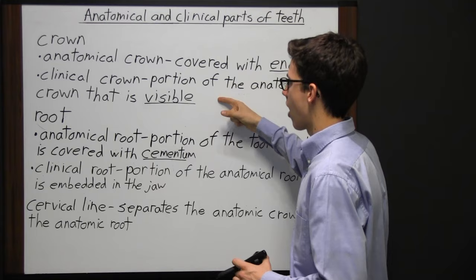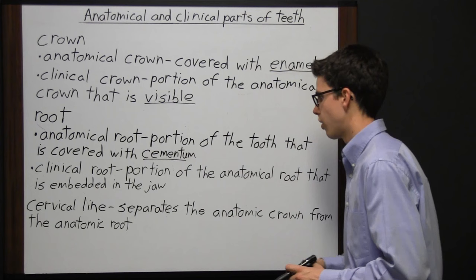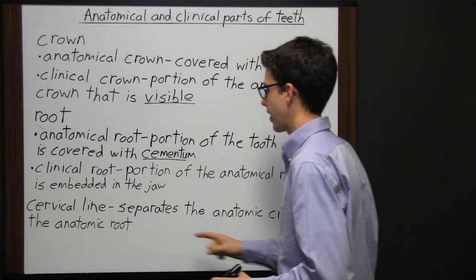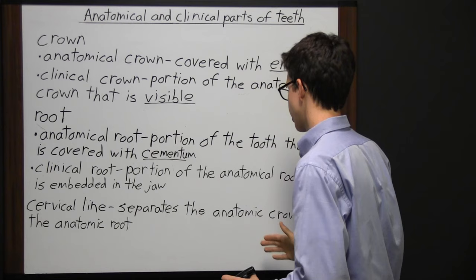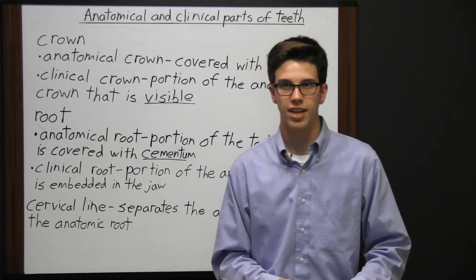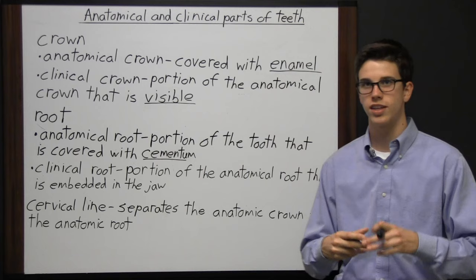When someone is younger, the clinical crown might be small, but as they get older and the gum line recedes, the clinical crown becomes bigger. However, the anatomical crown stays the same because it doesn't matter how much of the tooth is showing.